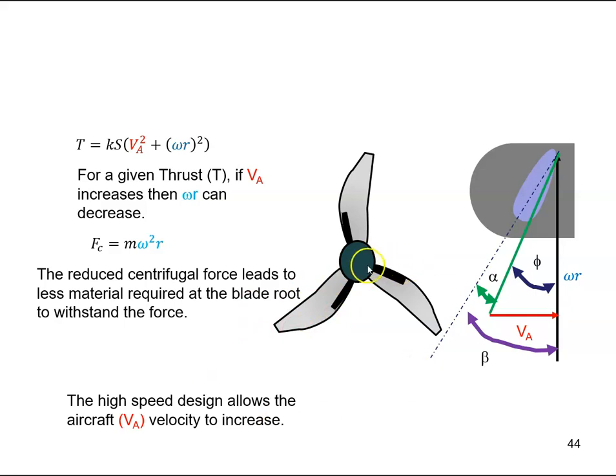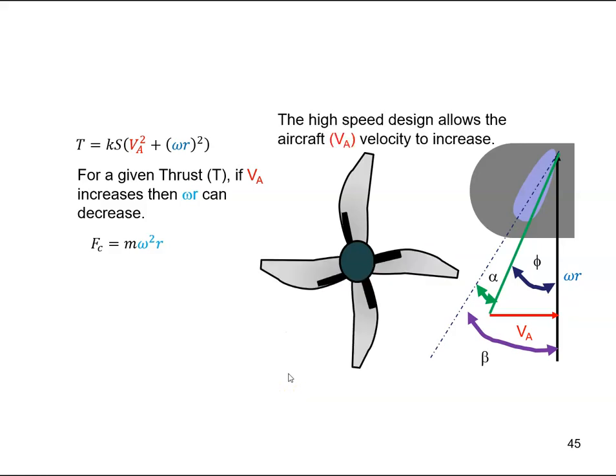And if we need less material, then there might be a little bit more room in here in the hub for another blade. And if I put in another blade, then my value of s increases. So I've put in another blade, I now have a four-bladed propeller, and s has now increased. So if I've increased s for a given thrust value, this has now increased. That means I can decrease this a little bit further.